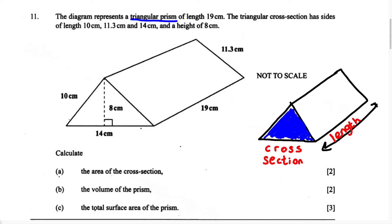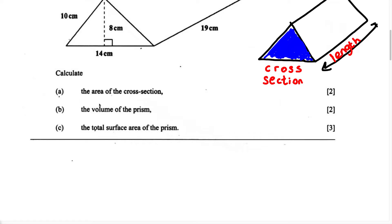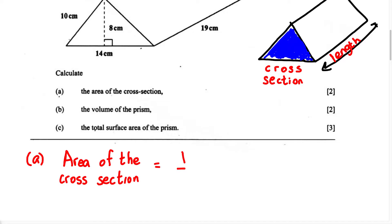Now that we have the two parts of this triangular prism, we're able to solve this problem. For part A, they say the area of the cross section. The cross section is the triangle. Therefore, to calculate the area of the cross section, we're going to take the area of a triangle. The area of a triangle is half base times height. So for part A, the area of the cross section equals half base multiplied by the height.